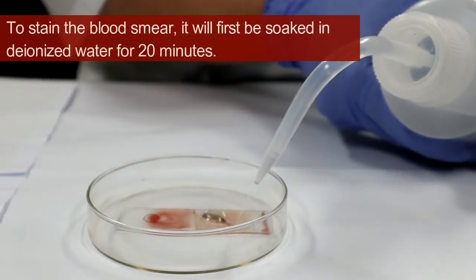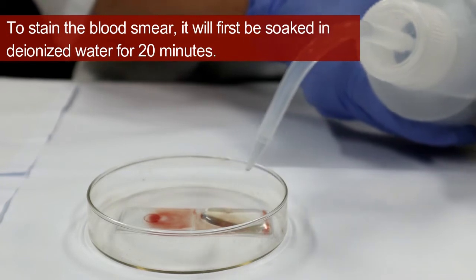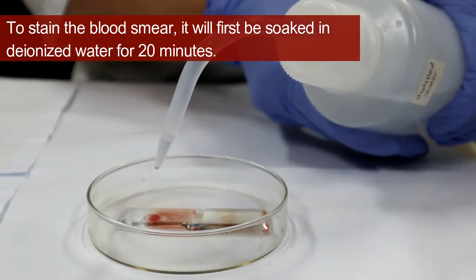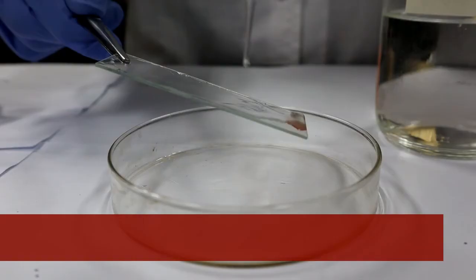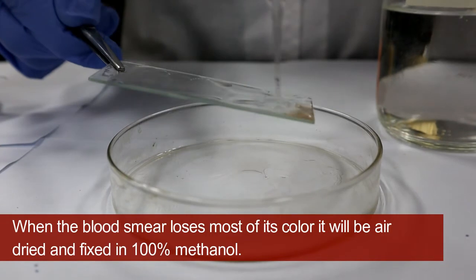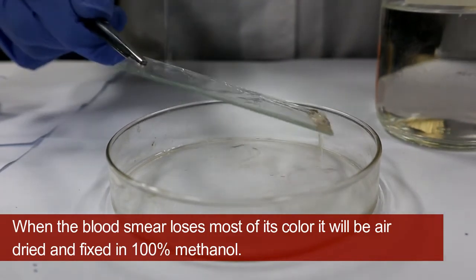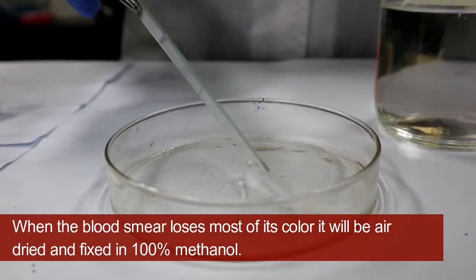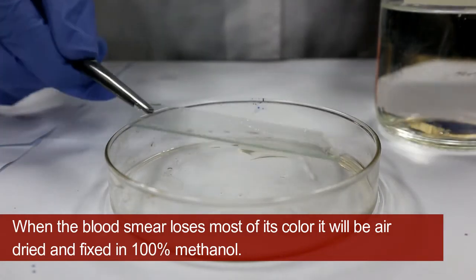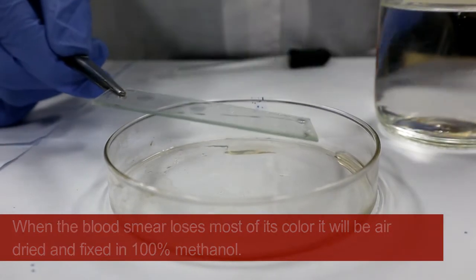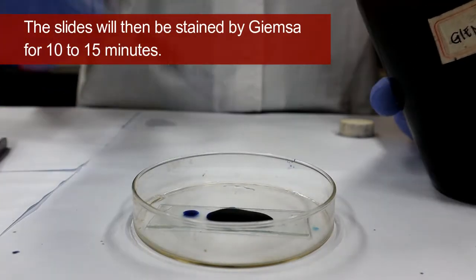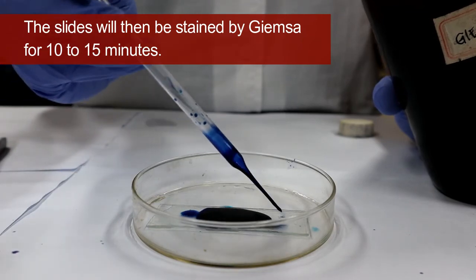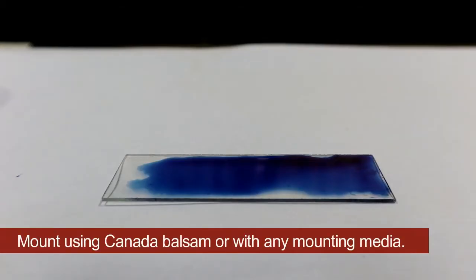To stain the blood smear, it will first be soaked in deionized water for 20 minutes. When the blood smear loses most of its color, it will be air dried and fixed in 100% methanol. The slides will then be stained by Giemsa for 10 to 15 minutes. Mount using Canada Balsam or with any mounting media.